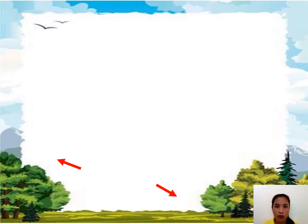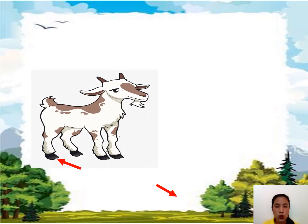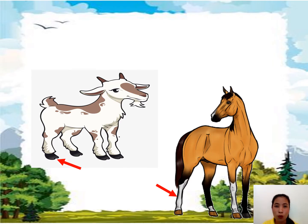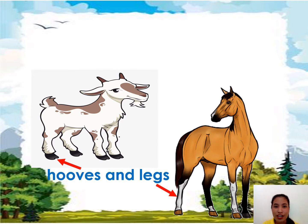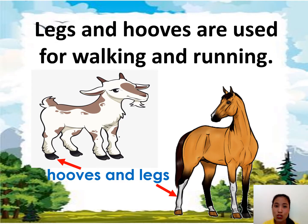How about these two animals — a goat and a horse? What is the movement of a horse? They can walk and run also, just like the dog. But what do they use to move? Their legs and hooves. Legs and hooves are used for walking and running.